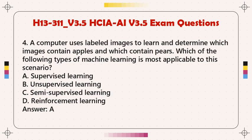Question 4: A computer uses labeled images to learn and determine which images contain apples and which contain pears. Which of the following types of machine learning is most applicable to this scenario? A. Supervised learning. B. Unsupervised learning. C. Semi-supervised learning. D. Reinforcement learning. Answer: A.